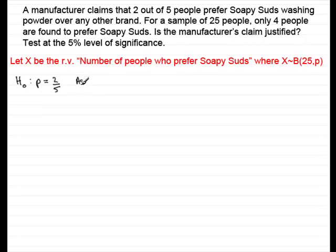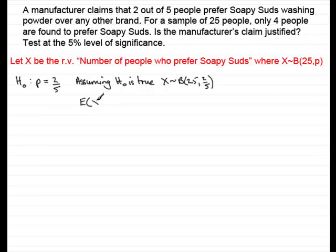Assuming H0 is true — that is that x is distributed binomially with n = 25 and probability of success = 2 fifths — then what could we expect the number of people who prefer Soapy Suds to be? This would be E(x), and for a binomial distribution it's N times P, or 25 times 2 fifths, which is 10. So we'd expect 10 people, if the manufacturer's claim were correct, to like using Soapy Suds. Only this time we've got less than that: just 4 people.